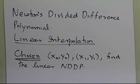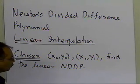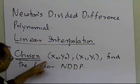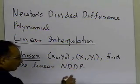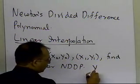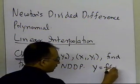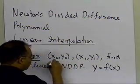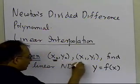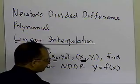We'll leave the point selection to an example. We are given y as a function of x, but only at two points — x0 and x1 — so it is a discrete function.